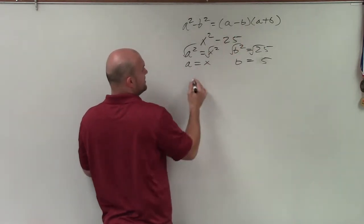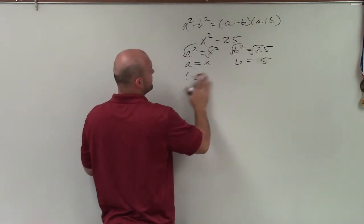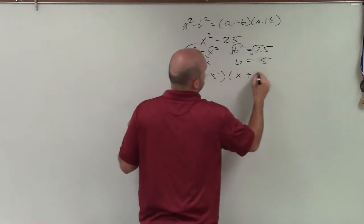Now I know what a and b are. I just factor it into (x - 5)(x + 5).